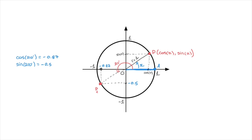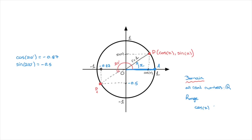Now, what about the domain and range of the cosine and sine functions? There's no limit to what angle we can put inside these functions, because there's no limit to the number of times P can move around the unit circle — both anticlockwise (a positive angle) or clockwise (a negative angle). So the domain of both cosine and sine is all real numbers. As for the range, since point P is stuck on the circumference of the unit circle, its horizontal and vertical coordinates will always be between negative 1 and 1. So cosine of x and sine of x are always less than or equal to 1 and greater than or equal to negative 1.